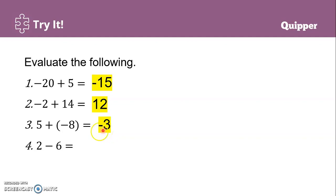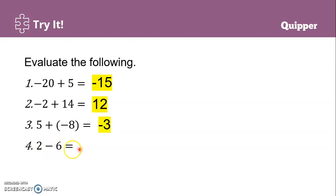5 plus negative 8 becomes 5 minus 8. Positive and negative — different signs, so we subtract: 8 minus 5 gives 3. The sign of the larger absolute value is negative, so the answer is negative 3. Last one: 2 minus 6 — different signs since 2 is positive and 6 is negative. Subtract: 6 minus 2 gives 4. Sign of the larger absolute value is negative. Answer is negative 4.